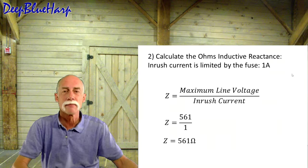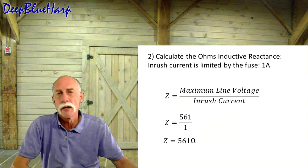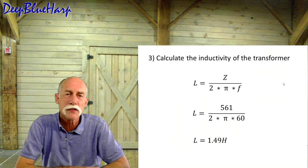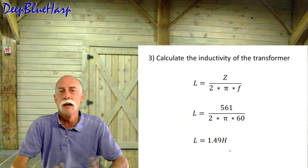The ohms inductive reactance. Remember, it's 1 amp. I'll let you do the calculation again at 3 amps. Maximum line voltage over inrush current, or 561. We need to calculate the inductivity of the transformer. It's frequency based. So the impedance from the previous calculation, 561 ohms, divided by 2 pi frequency, or 1.5 Henrys.